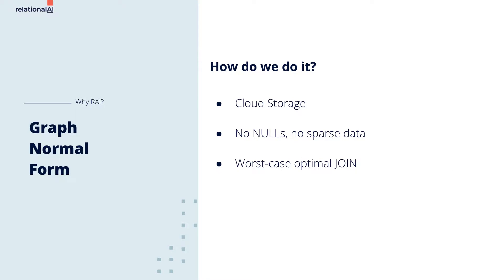The relational model is known for being able to handle high row counts. Cloud storage enables open-ended scalability for your relational data. Fully normalized GNF data has no empty rows, no sparse data. Your relations on disk are dense with data.